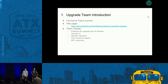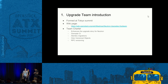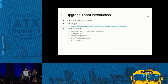At the summit, we have formed a sub-team. We have a wiki page and a weekly meeting. So if you are interested in enhancing the upgrade story for Neutron, please join us at the IRC meetings. We cover the Grenade CI, Alembic migrations, Oslo Versioned Objects, and RPC versioning.